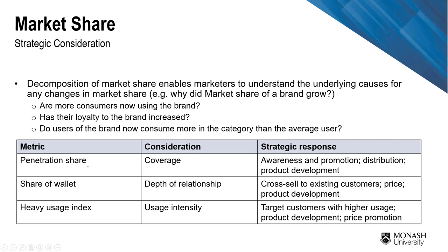If each of them is low, there are certain strategies to combat that. For example, if you are lacking in penetration share, you need more market coverage because you are not reaching all the market. One way to do that is to promote your products broadly — increase awareness through promotion and advertising, and also ensure the right distribution so your product is readily available across different supermarkets.